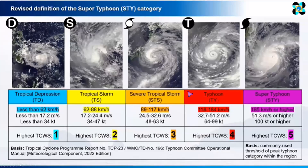This is the recent classification of the typhoon, from tropical depression down to super typhoon. We use a particular color coding to identify which part of the Philippines will experience each signal number. Signal 1 is blue, signal 2 is yellow, signal 3 is orange, signal 4 is red, and signal 5 is purple.